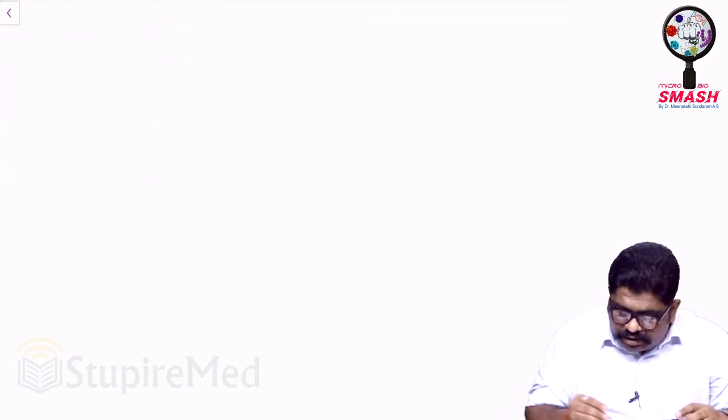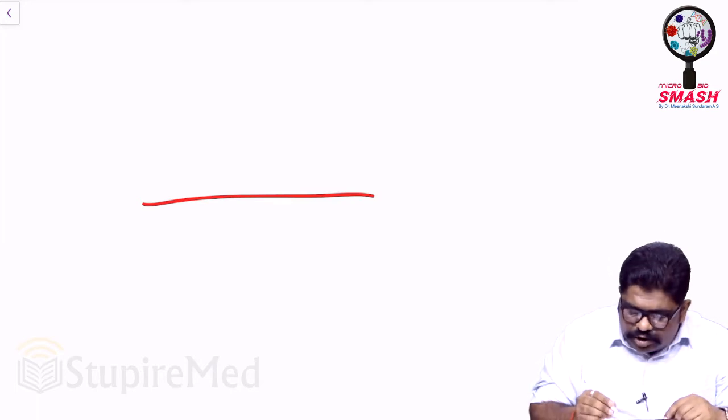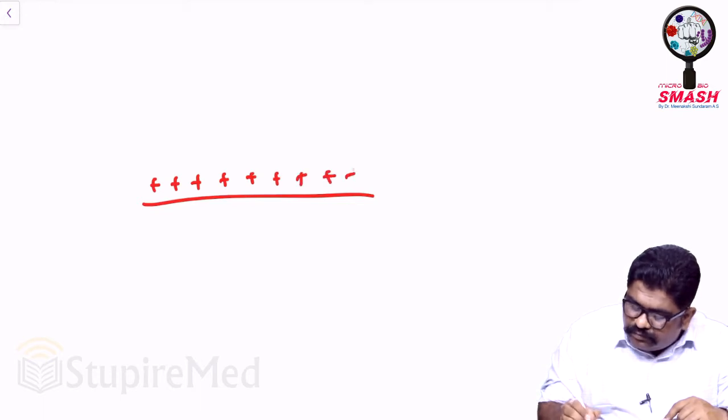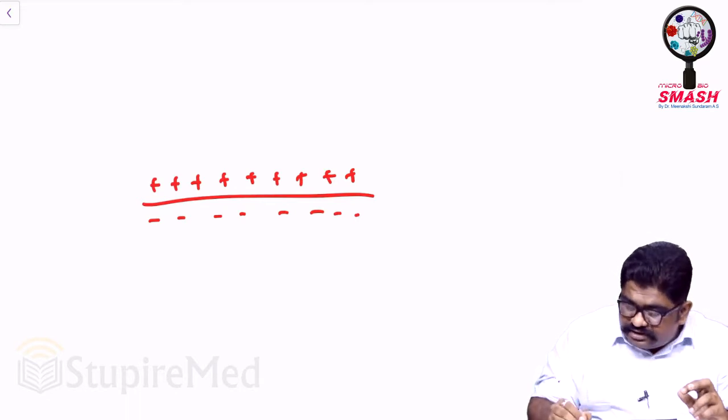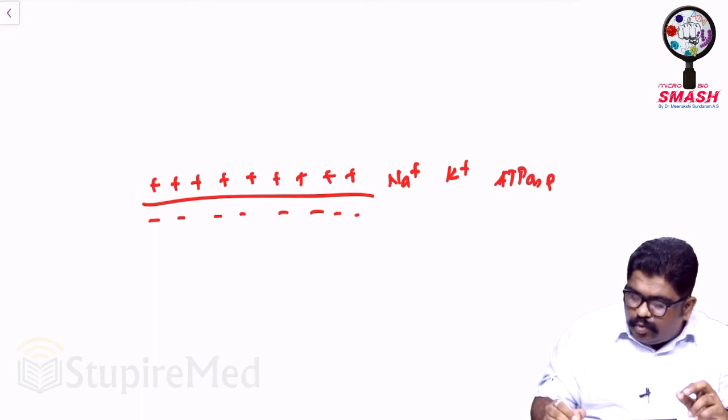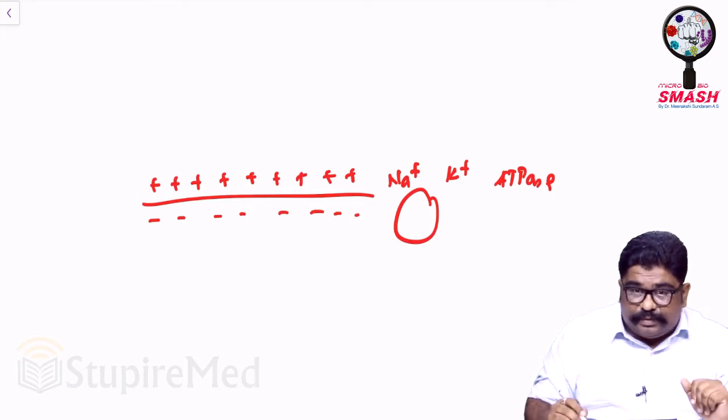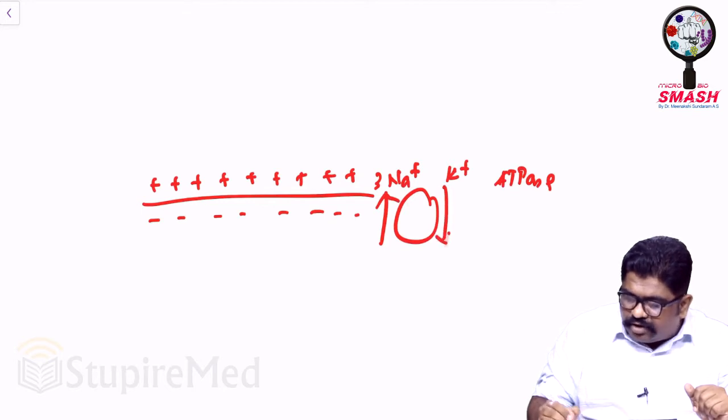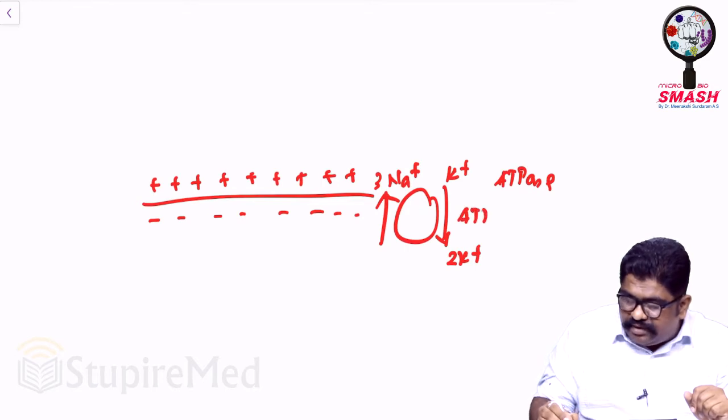If this is a simple membrane of a cell, generally you will be having a plus charge outside and a minus charge inside. One of the common reasons for such a thing is the presence of your sodium-potassium ATPase pump. There is always some kind of variations about this particular sodium-potassium ATPase pump. You will always have three sodium getting pumped out at the cost of two potassium pumped in, and this is against the concentration gradient, so you have to use ATP.